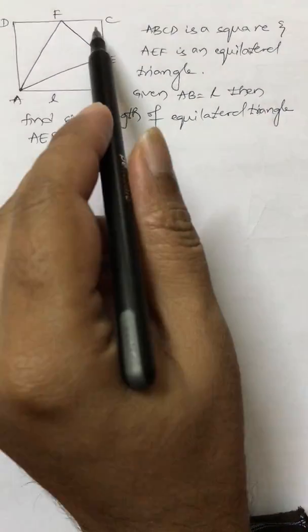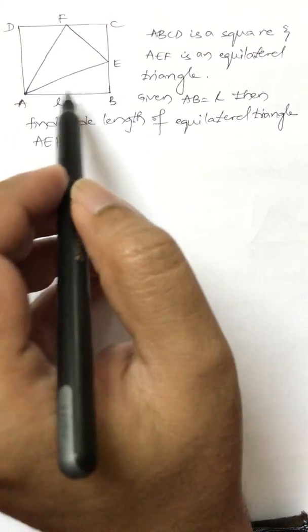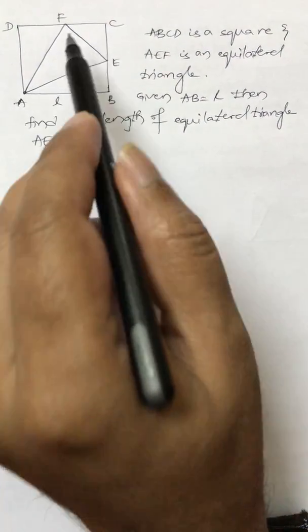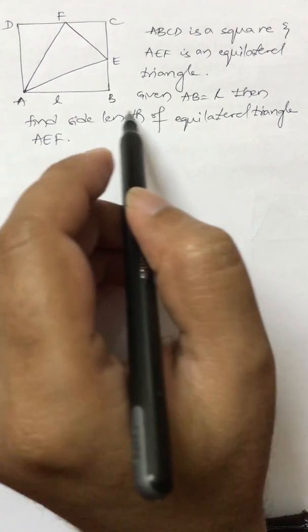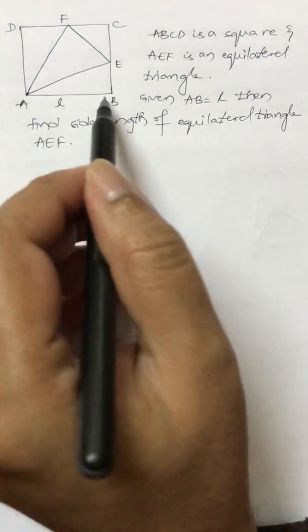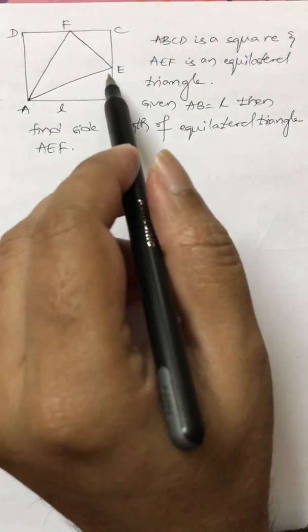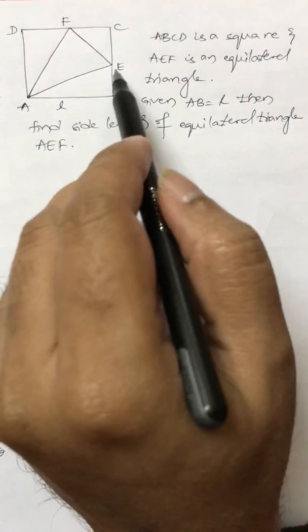Here a square A, B, C, D is given. A, E, F is an equilateral triangle. Given A, B is equal to l, then find the side length of this equilateral triangle.